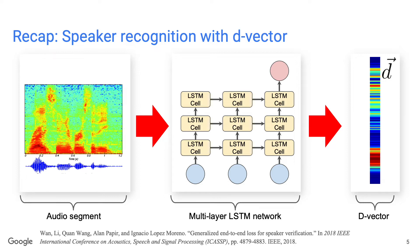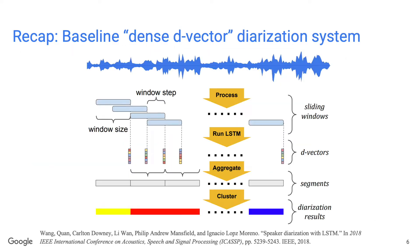This network is often called a speaker encoder. In this work, we use an LSTM-based speaker encoder, but the speaker encoder could actually be any type of neural network, such as transformers or conformers. Our baseline system is what we call a dense d-vector diarization system. In this system, we run the speaker encoder on sliding windows and aggregate them to segment-wise d-vectors, then use a spectral clustering algorithm on these segment-wise d-vectors.